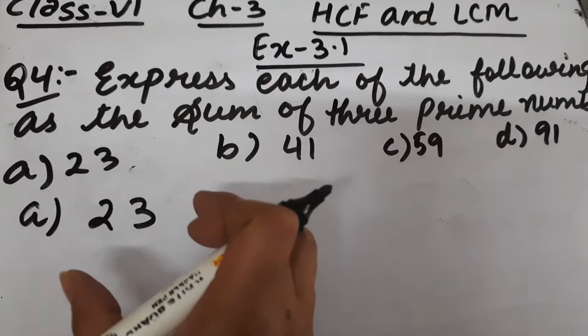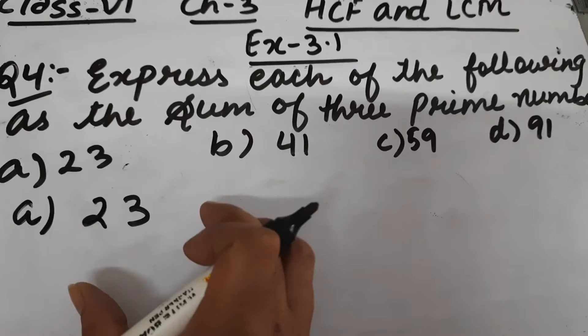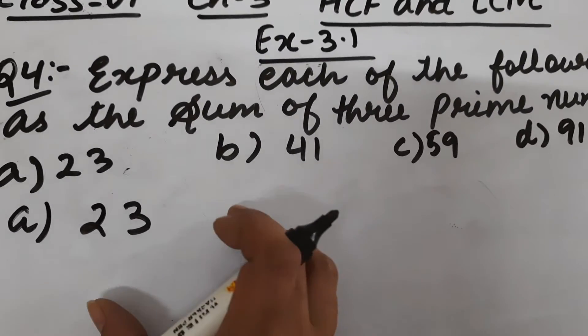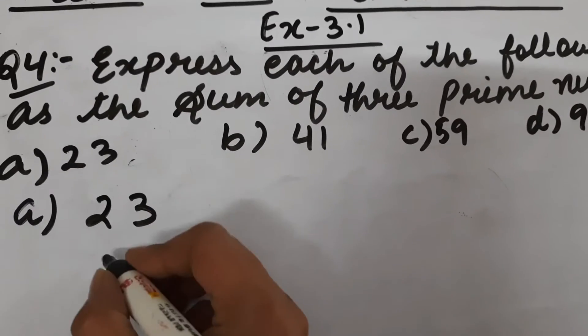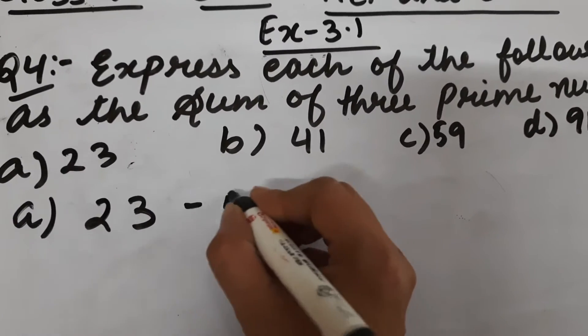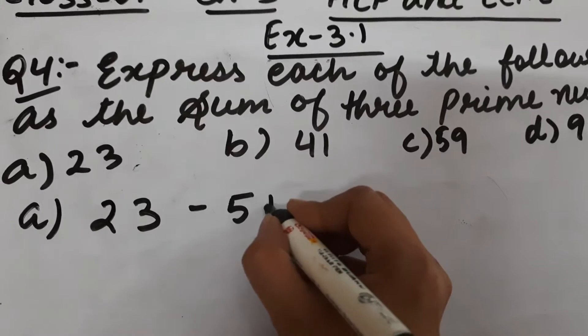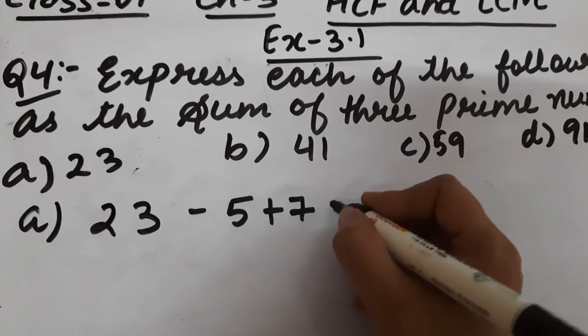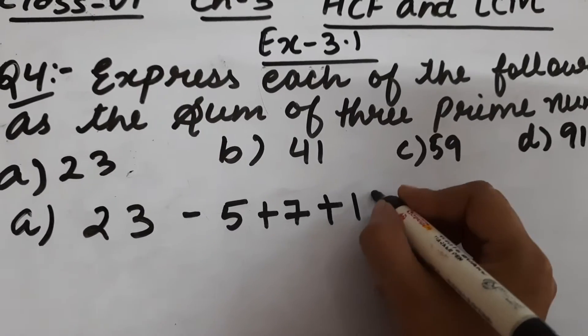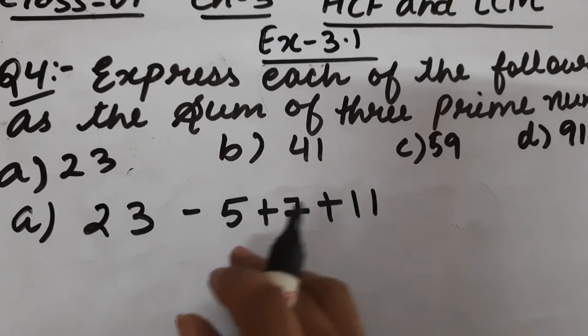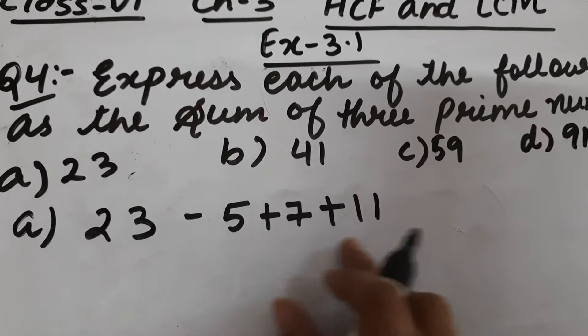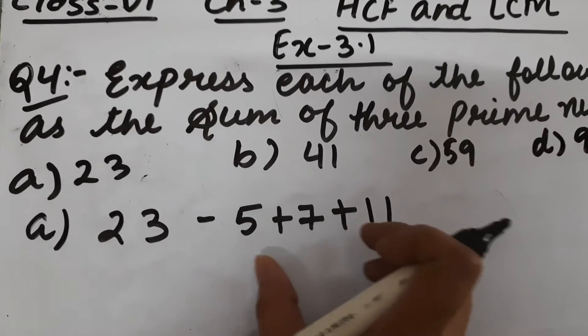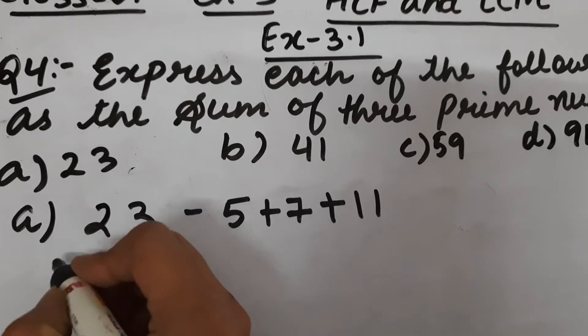Part A is 23. We have to write 23 as a sum of three prime numbers. We have to find three prime numbers whose sum is 23. So let's see, we will write 5 plus 7 plus 11. 5 plus 7 is 12, and 12 plus 11 is 23. And 5, 7, and 11, all these three numbers are prime numbers. So we can write 23 as 5 plus 7 plus 11.